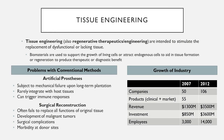Artificial prostheses are subject to mechanical failure upon long-term implantation. They rarely integrate themselves with host tissue in the same way that bones, tissues, and joints typically do. Also included here is the use of natural biomaterials that have been donated from other sources, which themselves can trigger immune responses.